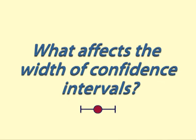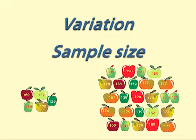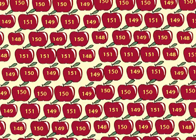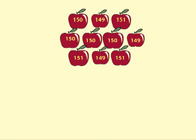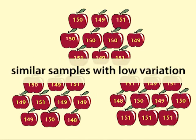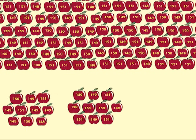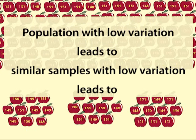What affects the width of confidence intervals? The width of a confidence interval depends on two things: the variation within the population of interest, and the size of the sample. If all the values in the population were almost the same, then our sample will also have little variation. Any sample we take is likely to be pretty similar to any other sample. Our estimate is going to be pretty close to the true population value, and we would have a small confidence interval.